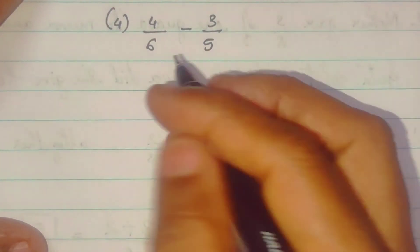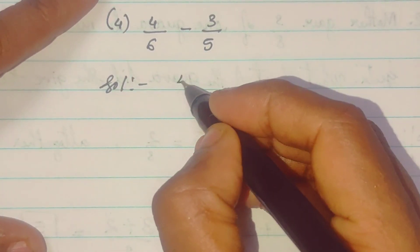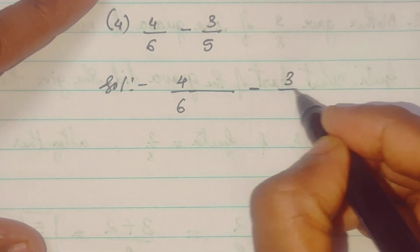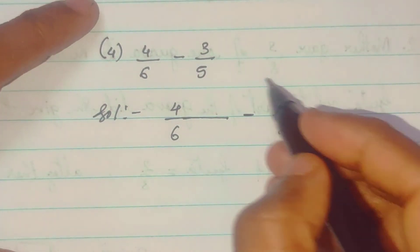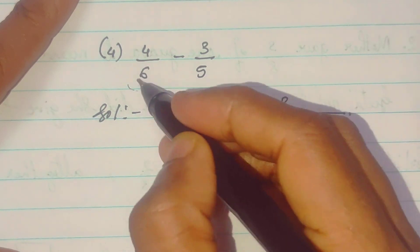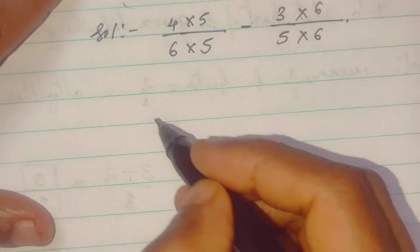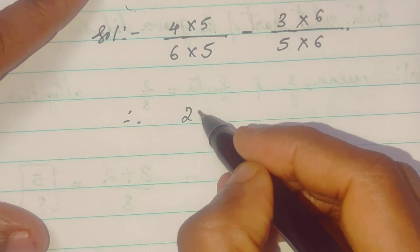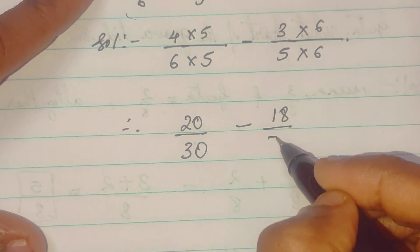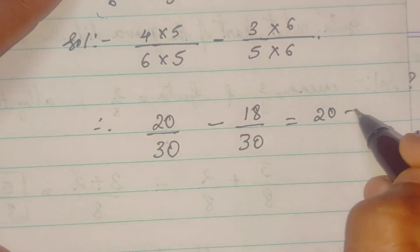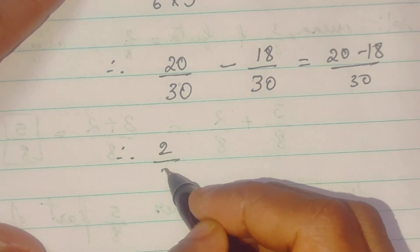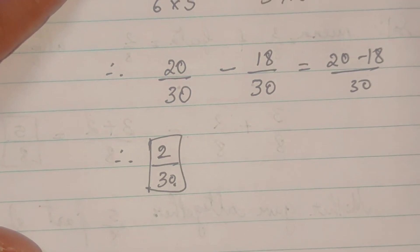Now, fourth sums, 4 upon 6. So, yeh again completely different. 3 upon 5. So, what we will do? Yehaan ka jo denominator yeh wo yehaan pae multiply hota hai. Or yeh denominator yehaan pae multiply hota hai. 4 fives are 20. 6 fives are 30. 3 fives are 18. 5 fives are 30. So, that is equal to 20 minus 18 upon 30. So, therefore, 2 upon 30. So, this is the answer.